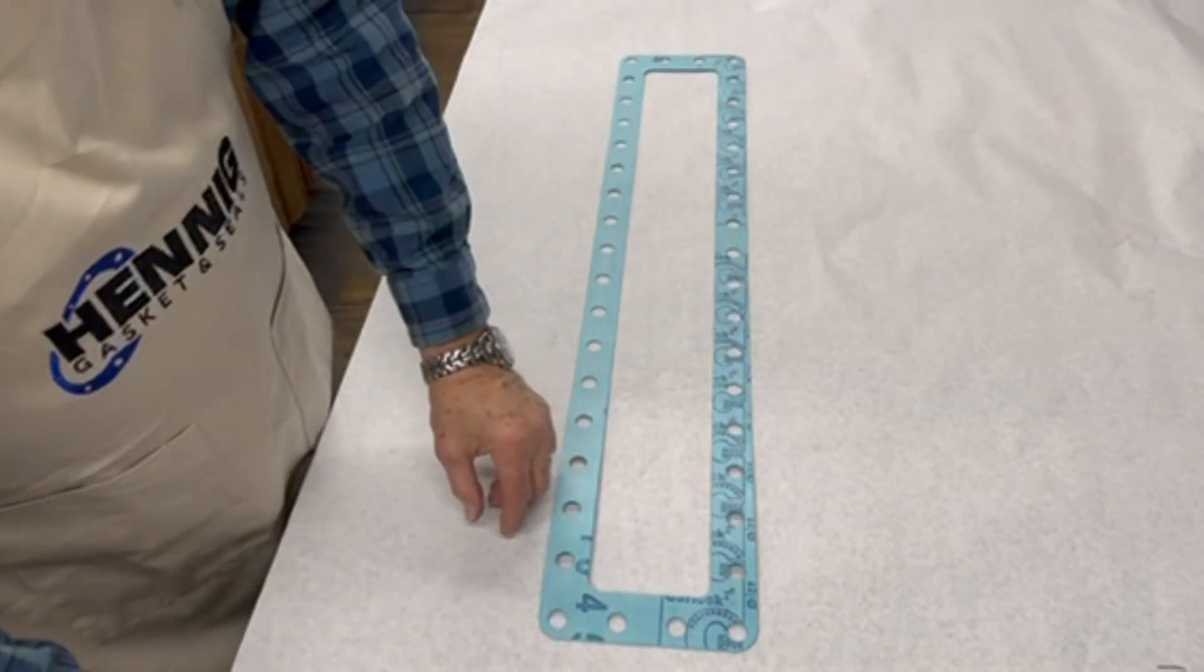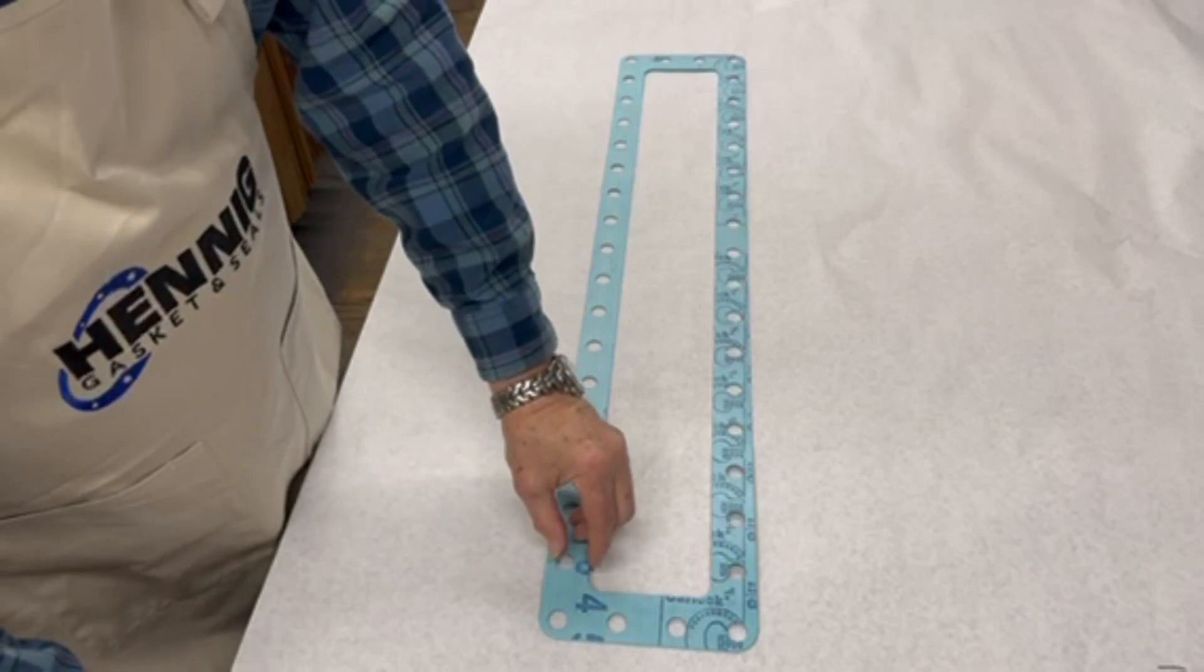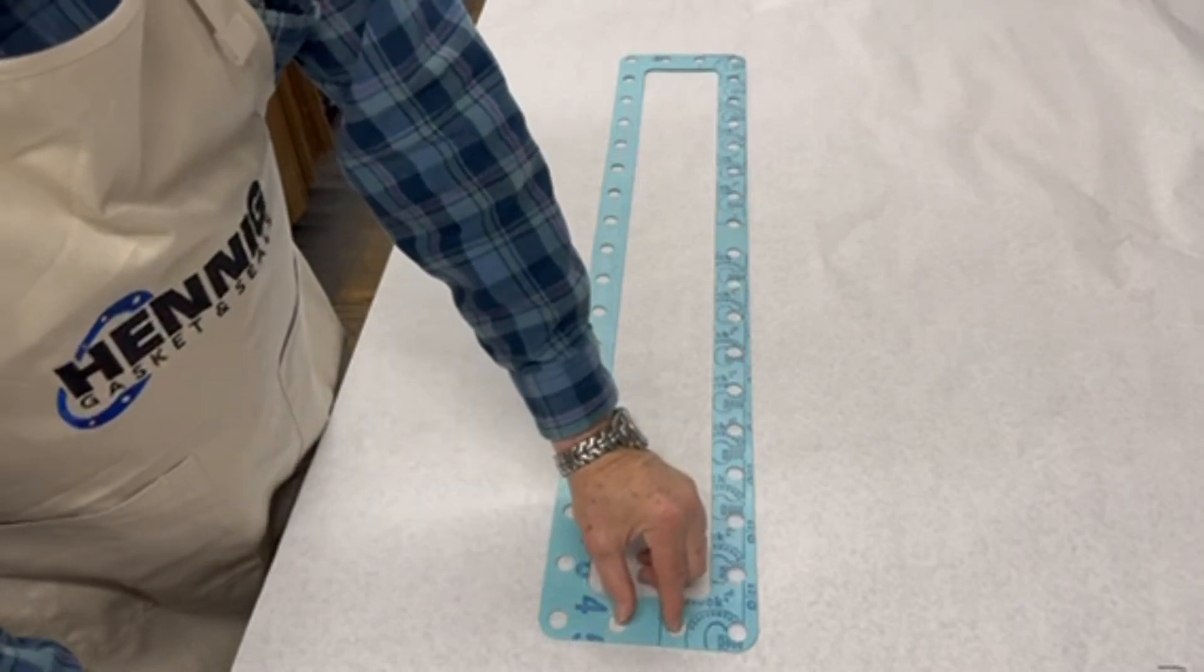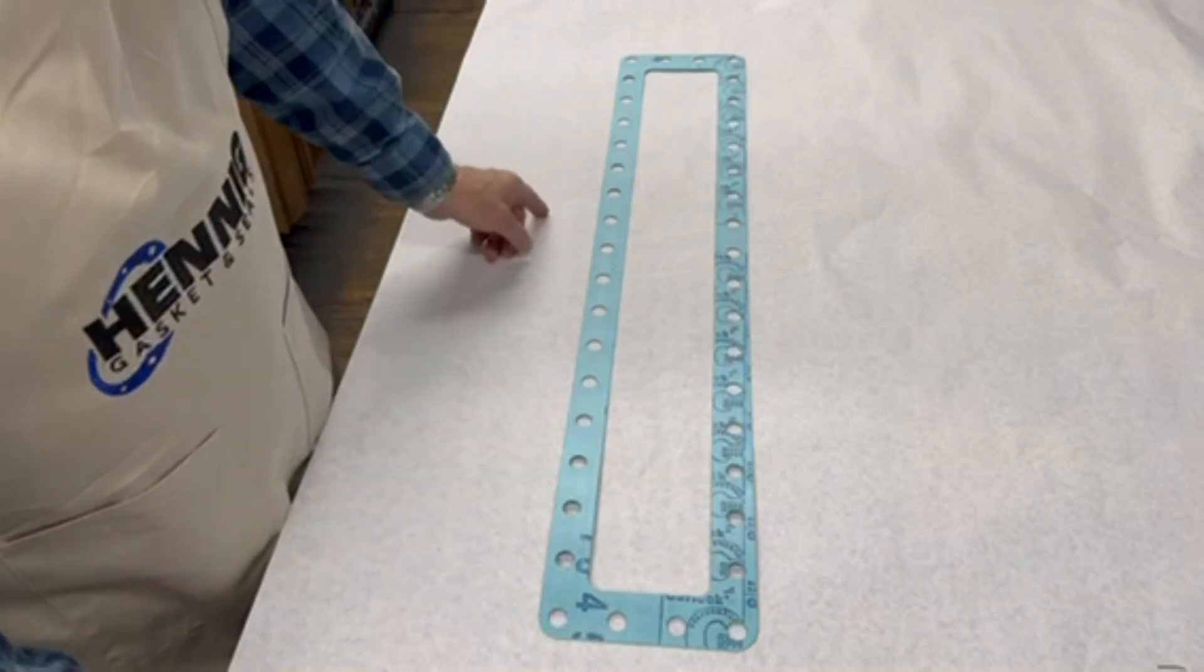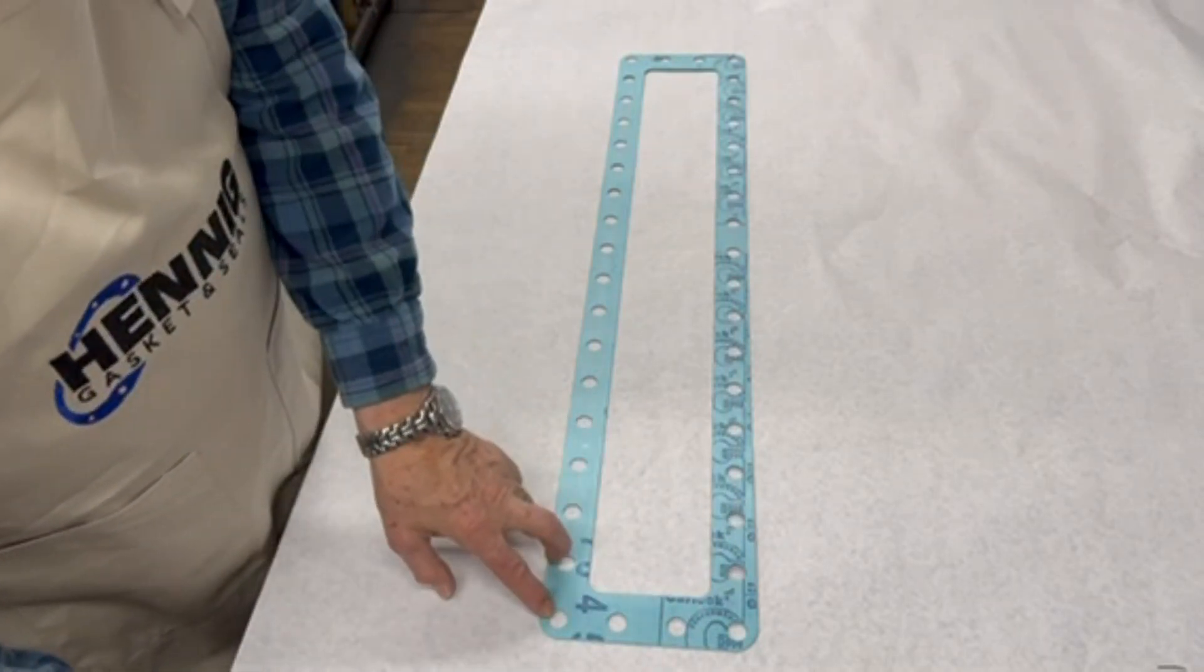So here we'll have four holes, three spaces that are 5 and 5 eighths apart. One space, two space, three spaces. Here we have 18 holes, but you subtract one and you have 17 spaces.